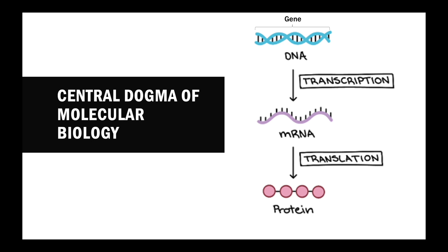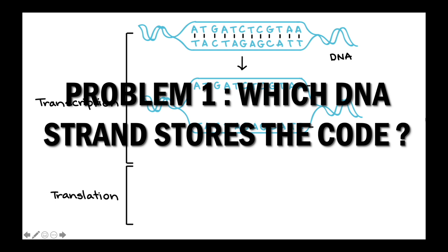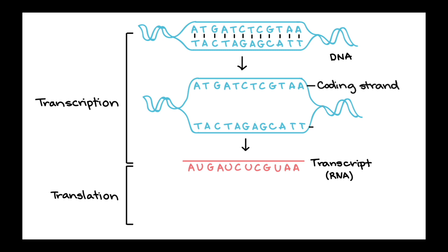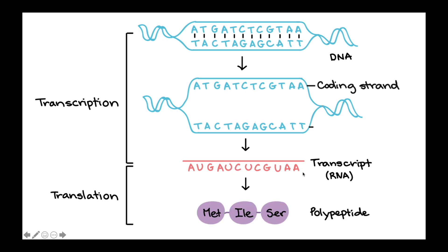The information in the gene will be copied into the form of mRNA through transcription, and the code carried by the mRNA will be brought to the ribosome to be translated into a sequence of amino acids during translation. However, there is a slight problem: since there are two strands in the DNA, which strand will store the code? Take this DNA for example — only one strand will store the code, and it is known as the coding strand. This coding strand is what needs to be copied into the mRNA to be read and translated by the ribosome into proteins.